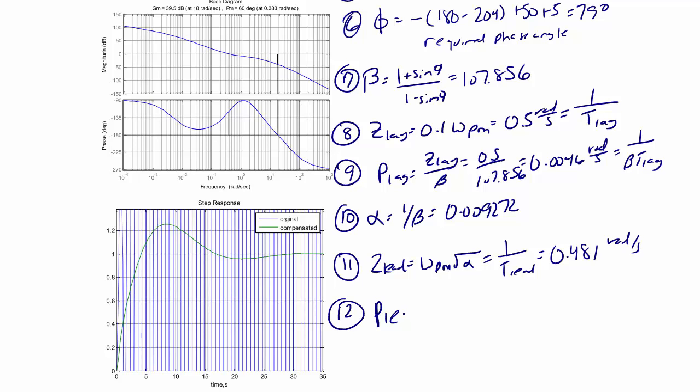Step 12, p lead is equal to 1 over alpha times t lead, or z lead divided by alpha, which is 51.926 radians per second.